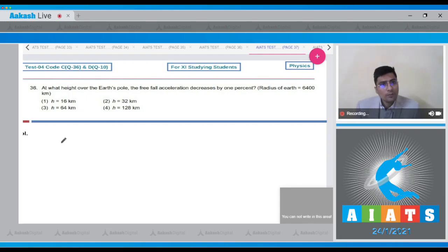Question 36. The variation of acceleration due to gravity with height is given as g into 1 minus 2h by Re for small heights.